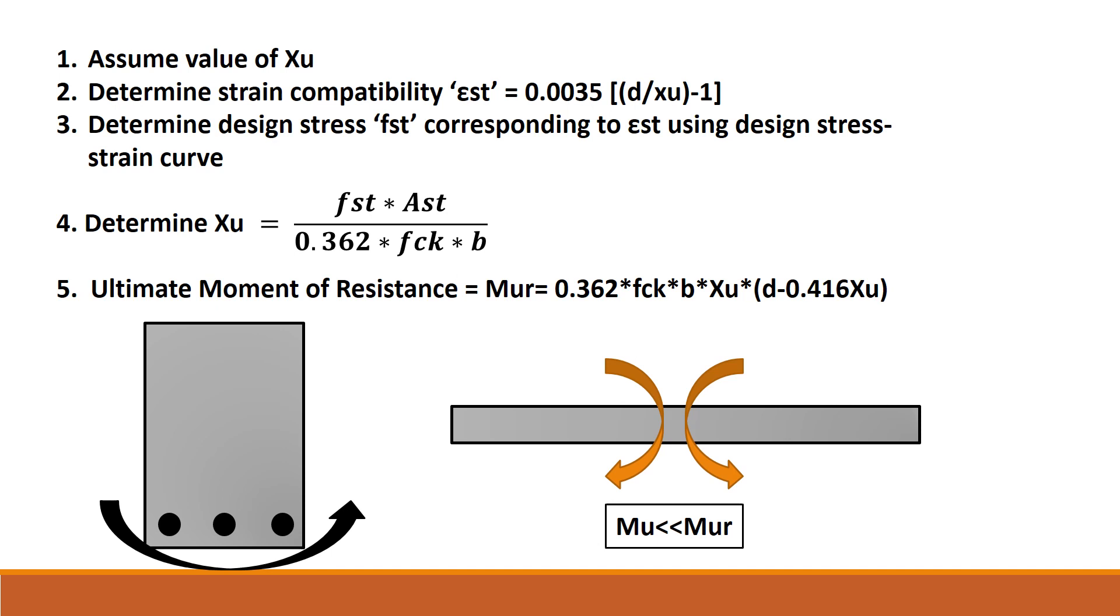Similarly, one can analyze a doubly reinforced beam section and determine the moment of resistance for such a section. It is to be noted under flexure, beam may also undergo shear, and it requires shear resistance as well. We know stirrups and bent up bars provide the required shear resistance.